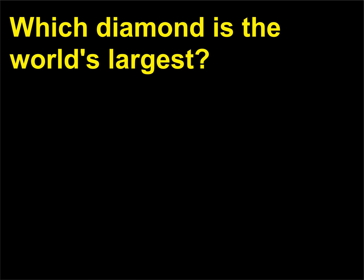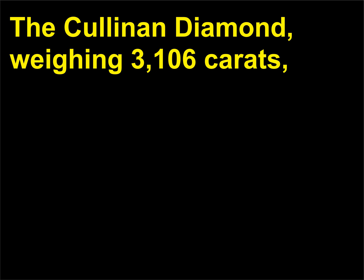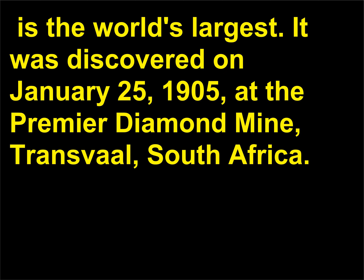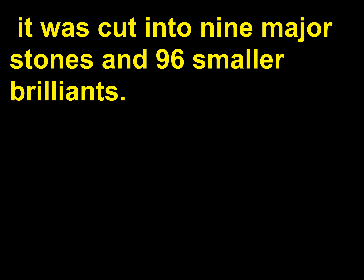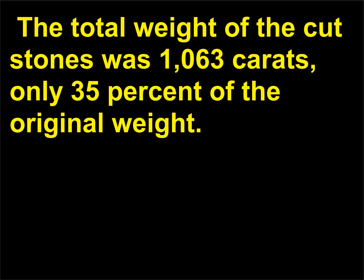Which diamond is the world's largest? The Cullinan diamond, weighing 3,106 carats, is the world's largest. It was discovered on January 25, 1905, at the Premier Diamond Mine, Transvaal, South Africa. Named for Sir Thomas M. Cullinan (1862–1936), chairman of the Premier Diamond Company, it was cut into 9 major stones and 96 smaller brilliants. The total weight of the cut stones was 1,063 carats — only 35% of the original weight.